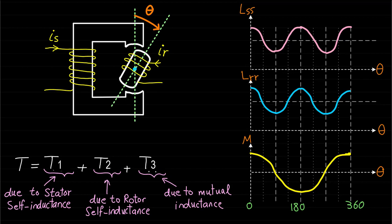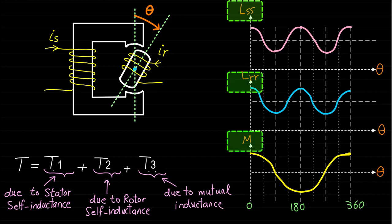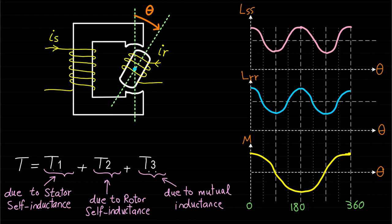The torque expression of this double-excited system will be derived mathematically in the upcoming lecture. It should be noted that this double-excited system has a special structure or geometry that makes the stator self-inductance, rotor self-inductance, and mutual inductance all change with respect to rotor position. This is not a general rule for all double or multiple-excited machines to have all these inductance changes with respect to rotor position. Most important machines in practice have one or two of these inductances changing with respect to rotor position. The physical structure or geometry of the machine determines which inductances change with rotor position and therefore the type of torque components produced.